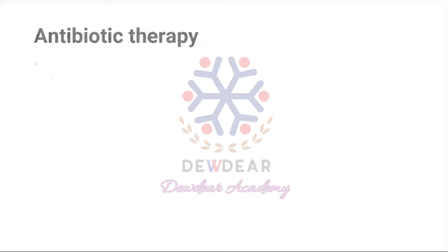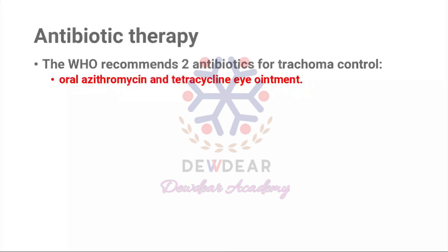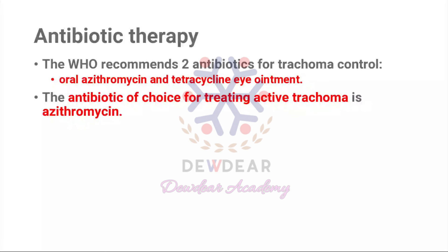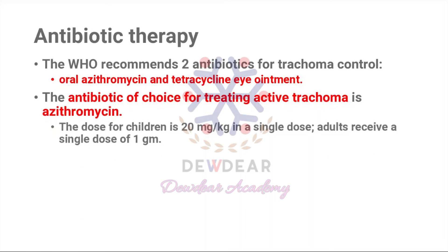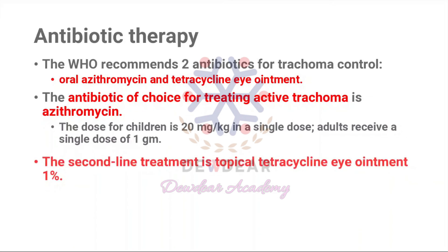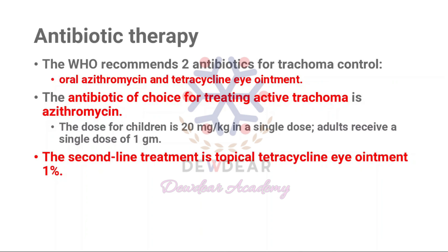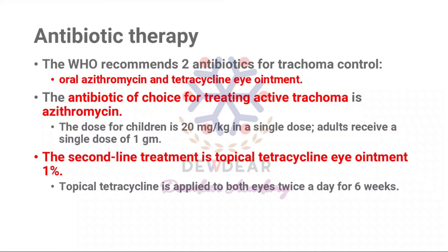WHO recommends two antibiotics for trachoma control: oral azithromycin and tetracycline eye ointment. The first-choice antibiotic for treating active trachoma is azithromycin. The dose for children is 20 milligrams per kilogram as a single dose, and adults receive a single dose of one gram. The second-line treatment is topical tetracycline eye ointment 1 percent, applied to both eyes twice a day for six weeks.